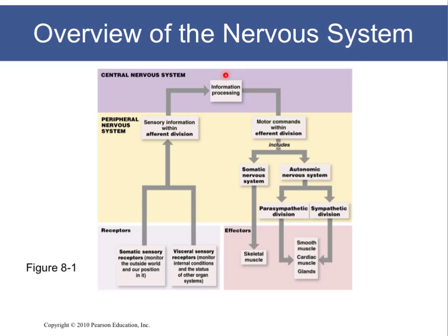The peripheral nervous system is divided into two divisions: the afferent division and the efferent division. You can think of the peripheral nervous system as either receiving information — that information coming from the sensory receptors all over our body — or information being transmitted from the CNS to the body through the peripheral nervous system via the efferent division.